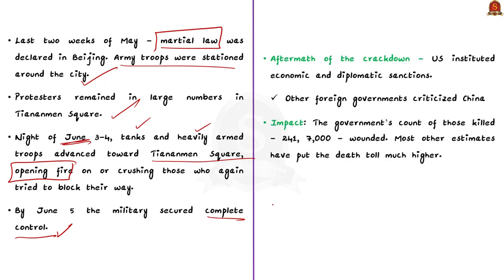In the aftermath of the crackdown, the United States issued economic and diplomatic sanctions for some time, and many foreign governments criticized China's handling of the protesters. The Chinese government's count of those killed was 241, with about 7,000 wounded, though most other estimates put the death toll much higher. In the years since, the government has generally attempted to suppress references to the incident, and public commemoration is officially banned in China. The current news article represents another attempt by China to suppress any reference to the incident.